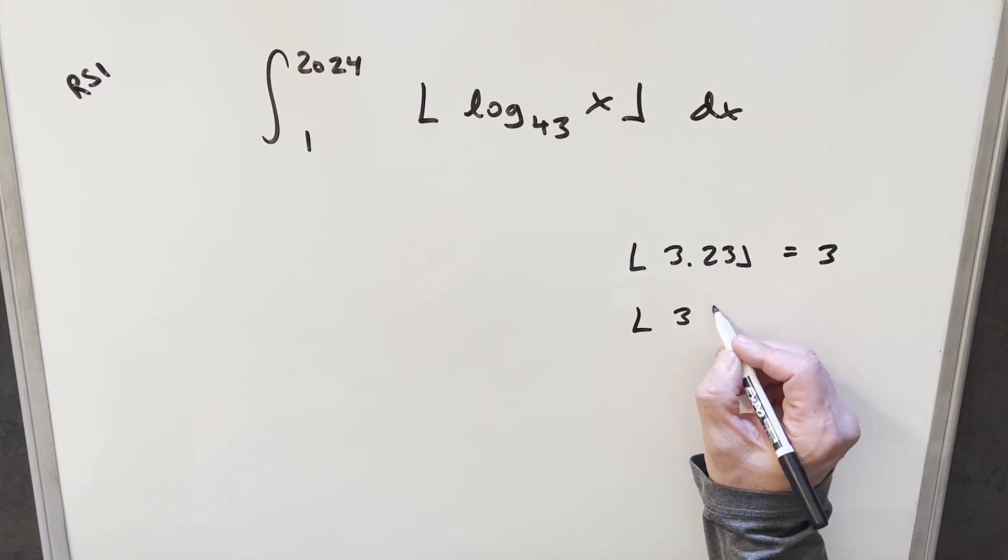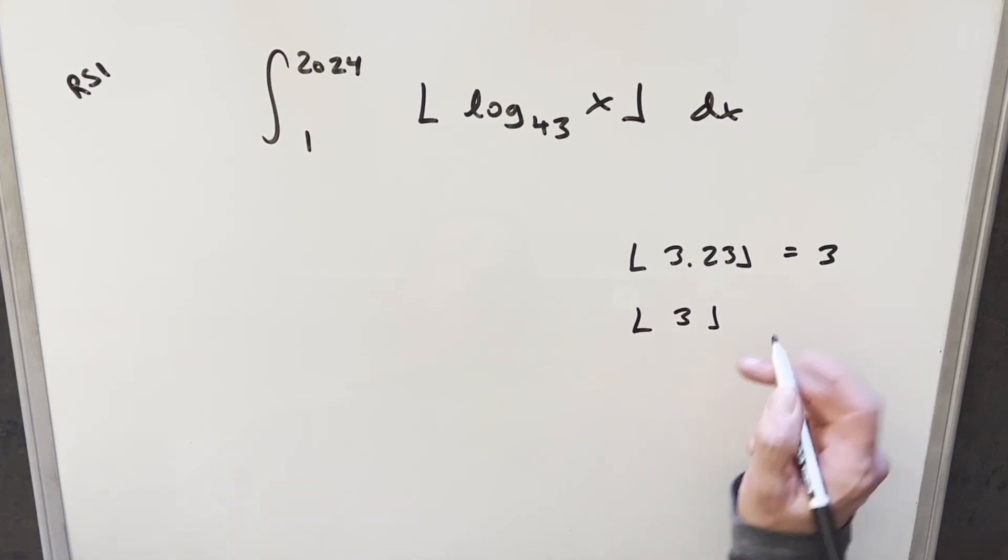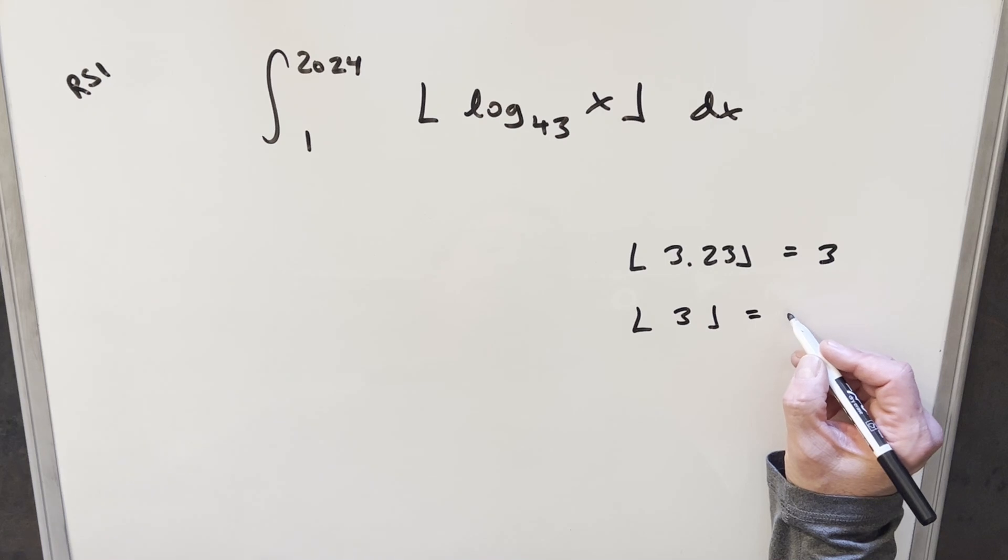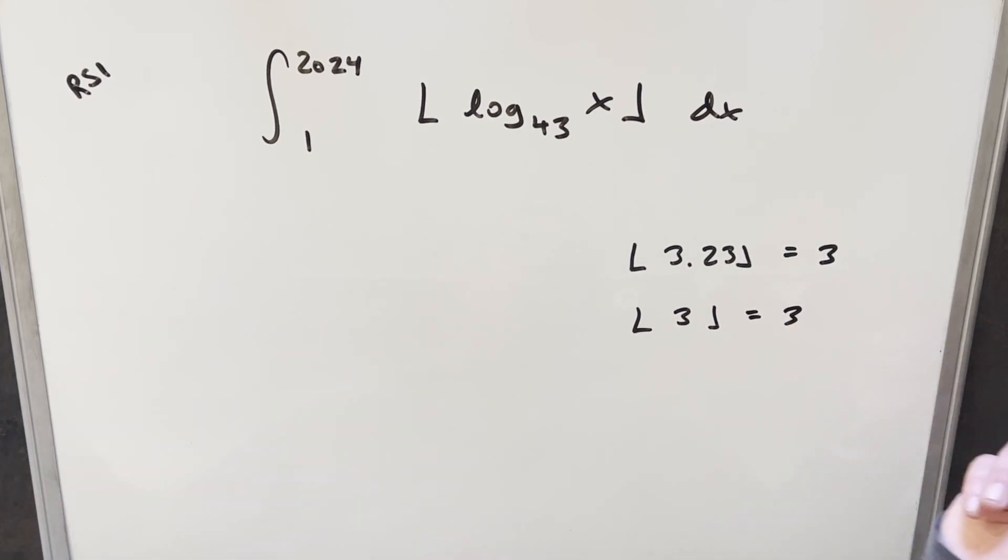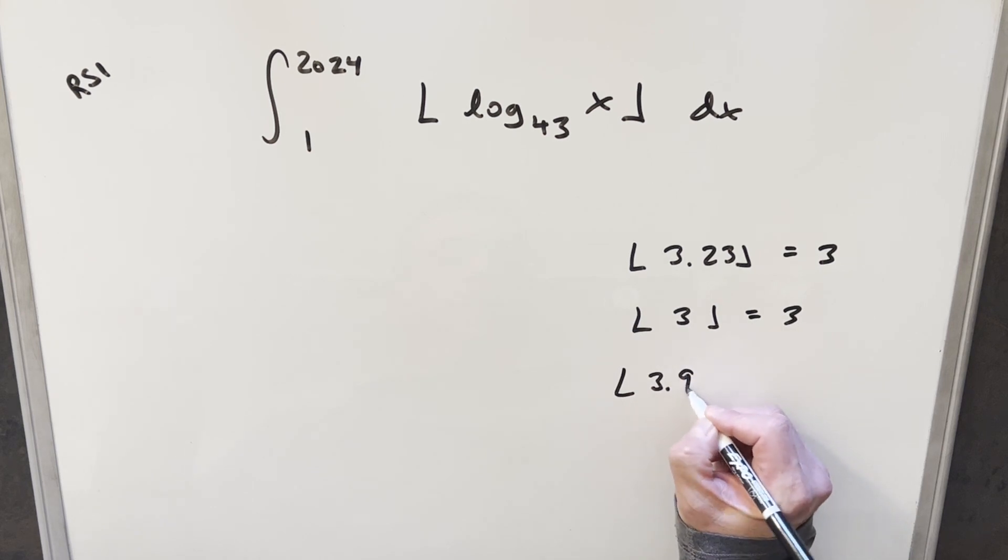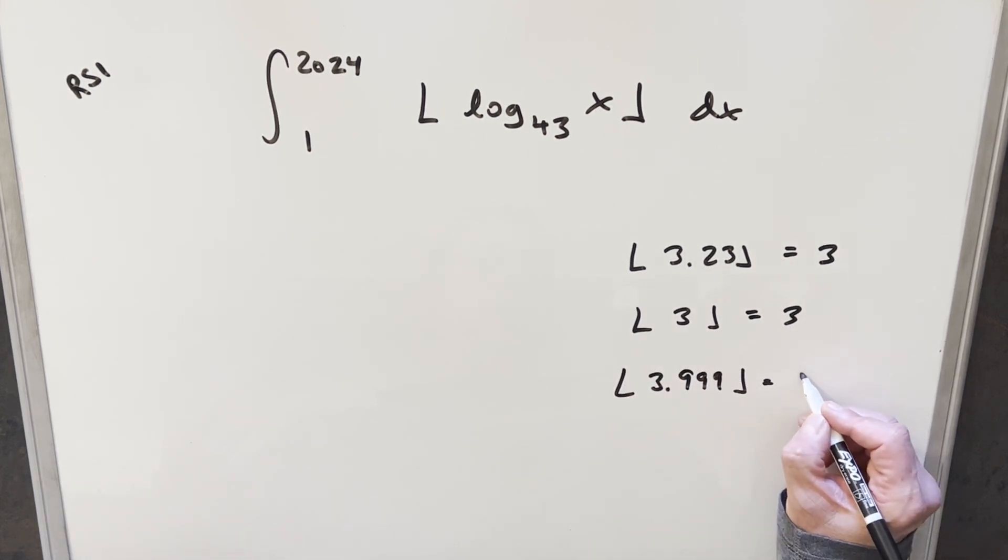Now let's say the input is already an integer. So like if we want the floor of three, we're already at an integer value. So the rounding down just keeps me at three. And so the floor is always going to return an integer, even if I have 3.999 and I'm really close to four, it still rounds me down to three.